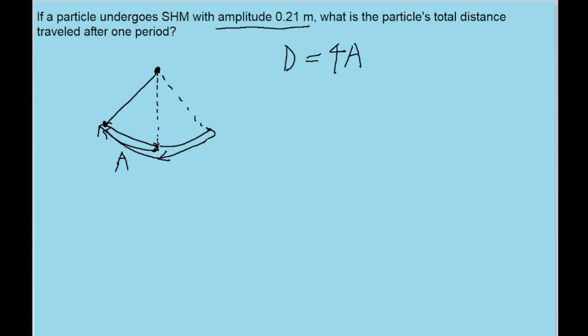So in order to go to its opposite position and then back, it has to travel the distance of the amplitude four times. So this is the formula we need for this problem.